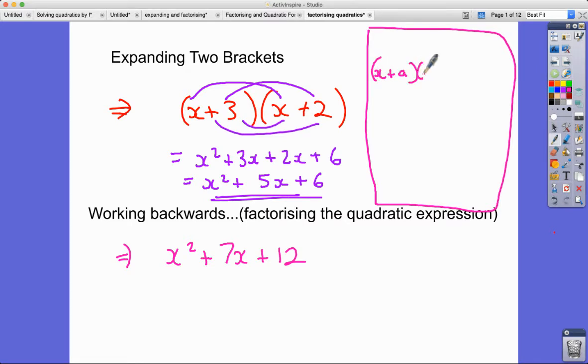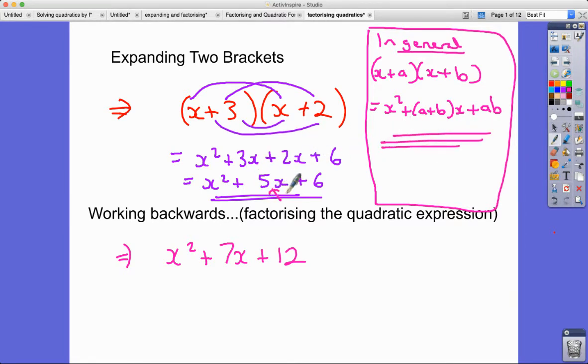So this is in general. What's happening is that we are ending up with an x squared. The coefficient of x is actually the sum of the two numbers, so this is a plus b times by x. And then the number on the end is the product of the a and the b. So we get this. For instance here, 5 is 3 plus 2 and the 6 is 3 times 2.